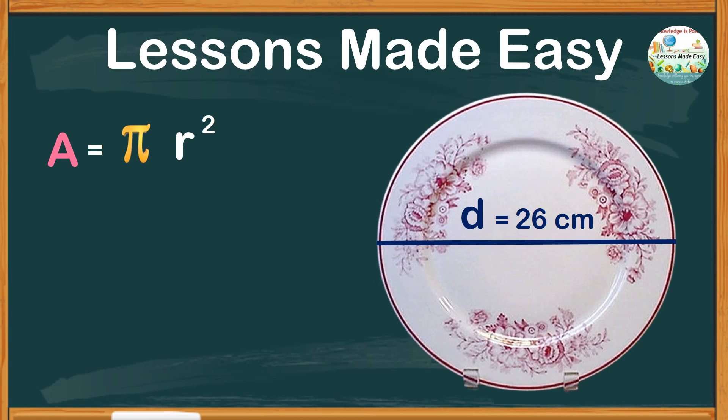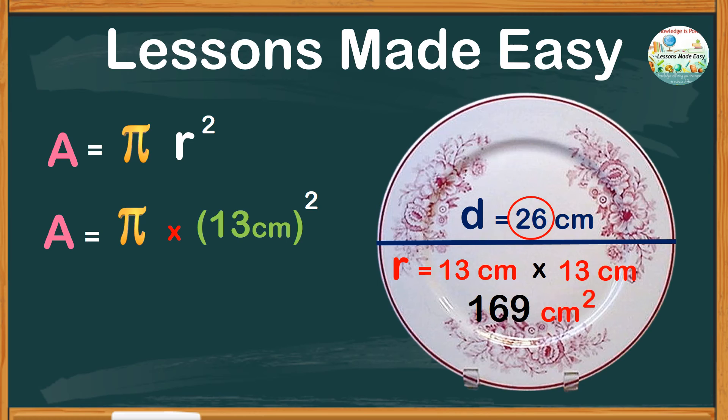So if the diameter is 26 centimeters, therefore the radius is only 13 centimeters. Then substitute the values: area equals pi times 13 centimeters squared. It means 13 times 13, which is 169. So area equals 3.14 as the value of pi times 169.